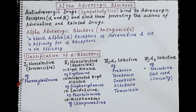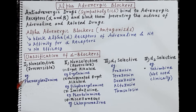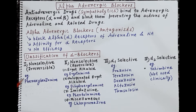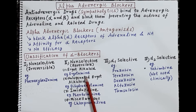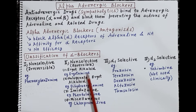Phenoxybenzamine is used for the treatment of hypertension caused by pheochromocytoma, which we will study in the later part of the session. Our second category of drugs are the non-selective reversible alpha blockers.